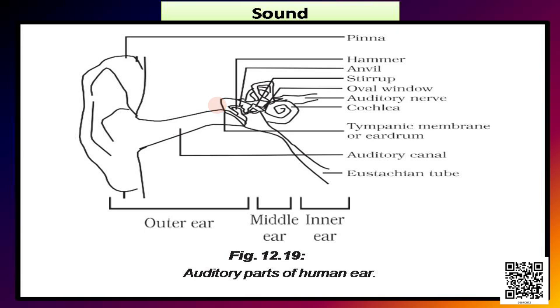The vibrations are amplified several times by three bones: the hammer, anvil and stirrup in the middle ear. The middle ear transmits the amplified pressure vibrations received from the sound wave to the inner ear. In the inner ear, the pressure vibrations are turned into electrical signals by the cochlea. These electrical signals are sent to the brain via the auditory nerve and the brain interprets them as sound.